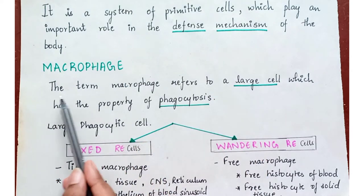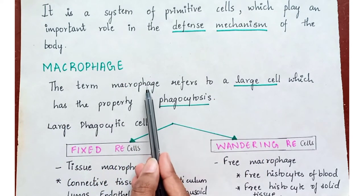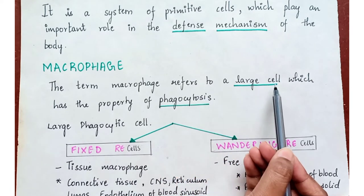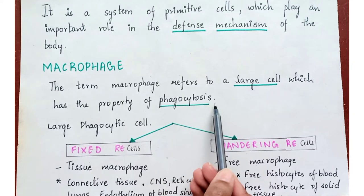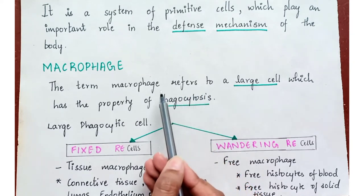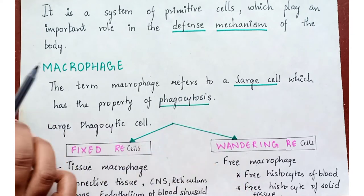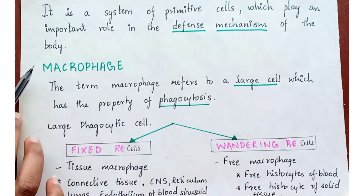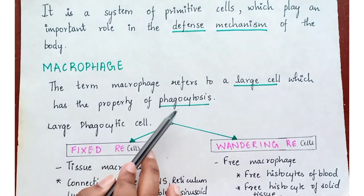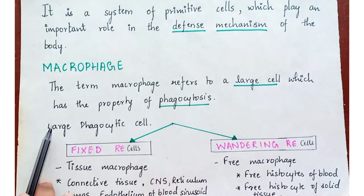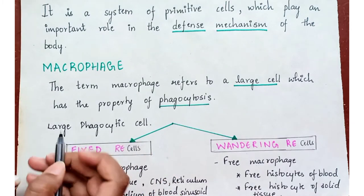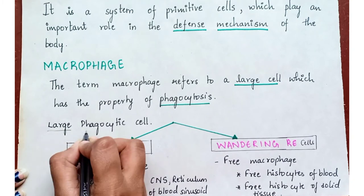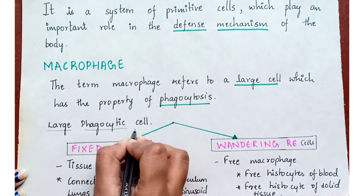The term macrophage refers to a large cell which has the property of phagocytosis — it engulfs a cell and destroys it. The macrophage mainly has the property of phagocytosis, and is also called the large phagocytic cell.